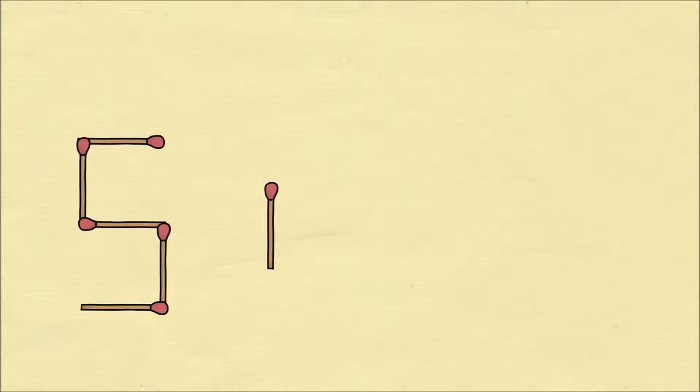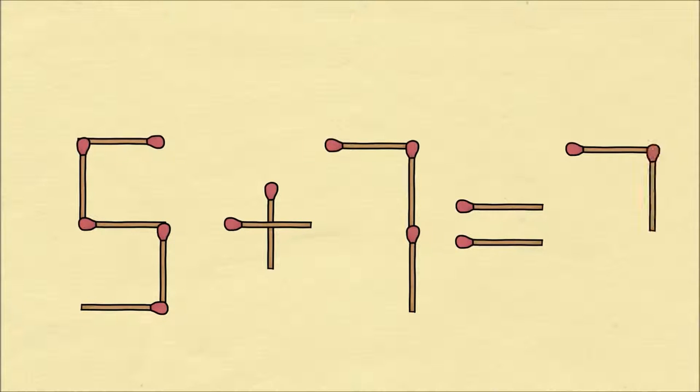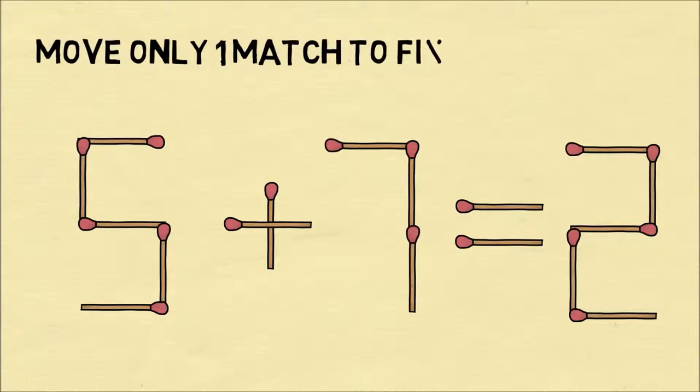In the third puzzle, we're going to take matches and form a mathematical equation. Five plus seven equals two. Now, this is obviously an incorrect equation. The puzzle is, can you move only one match to fix the equation so it's mathematically correct?